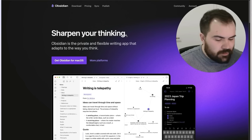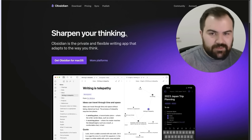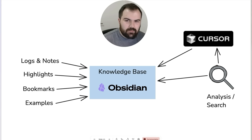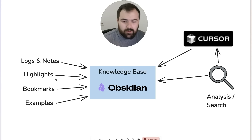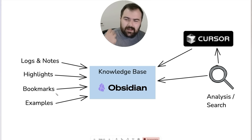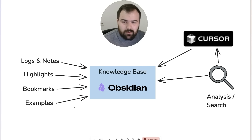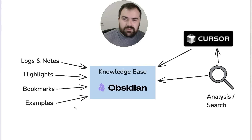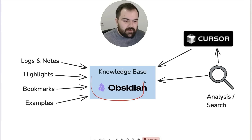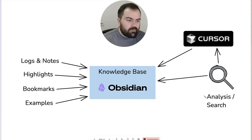Today we're going to be talking about knowledge management with one of my favorite tools, Obsidian. Obsidian is effectively, for me, where I keep track of my engineering logs, my notes, any highlights I have from books or articles I've read, any bookmarks I have, any links that I think are really valuable that I might want to find later, as well as example code. I'm a developer, so I spend a lot of time tracking different solutions to different problems, and a lot of that stuff ends up in here. Obsidian is like a central store for all of that information.